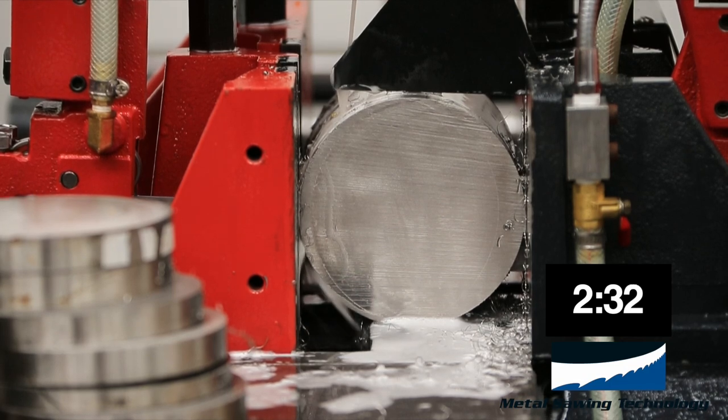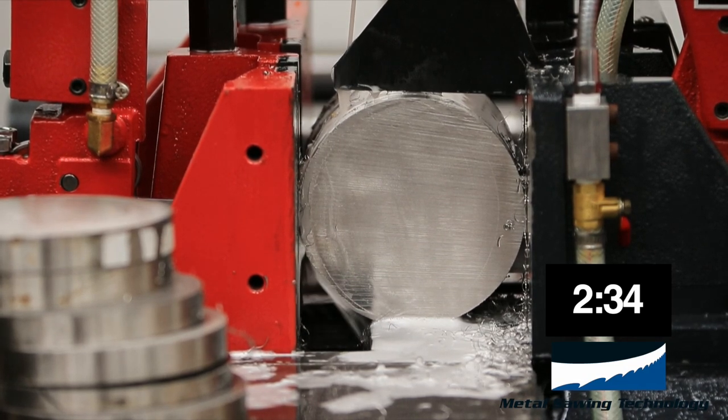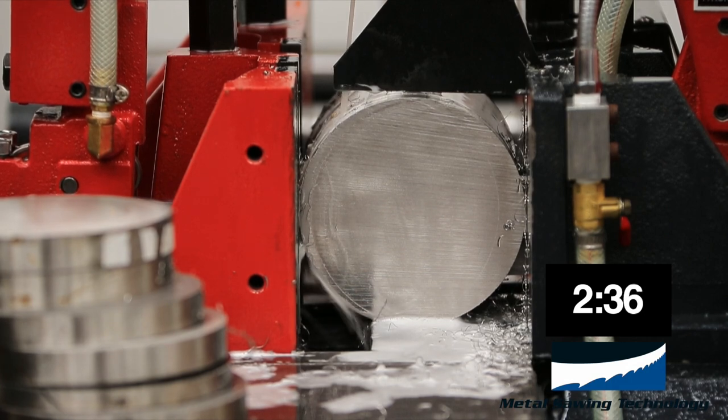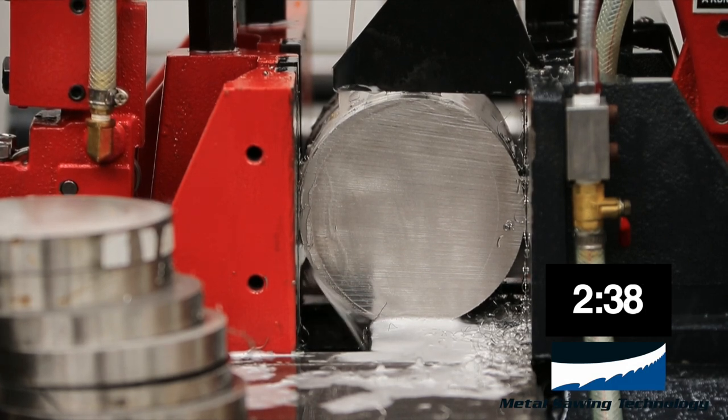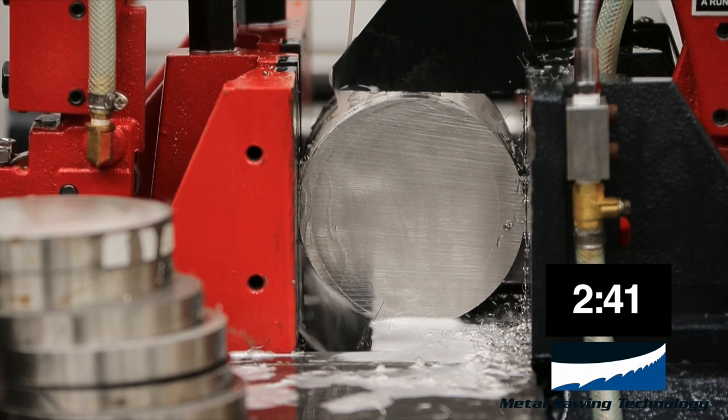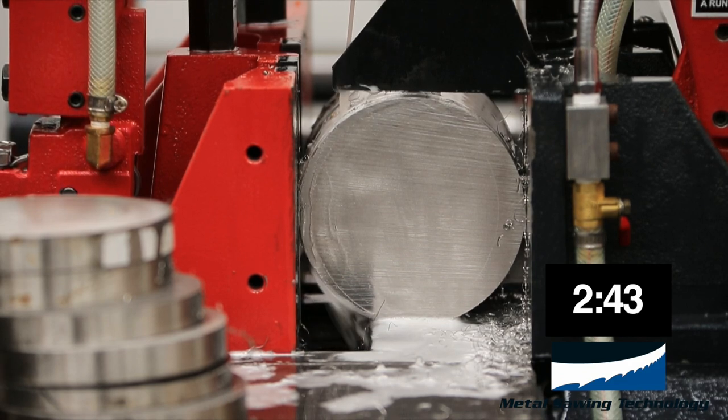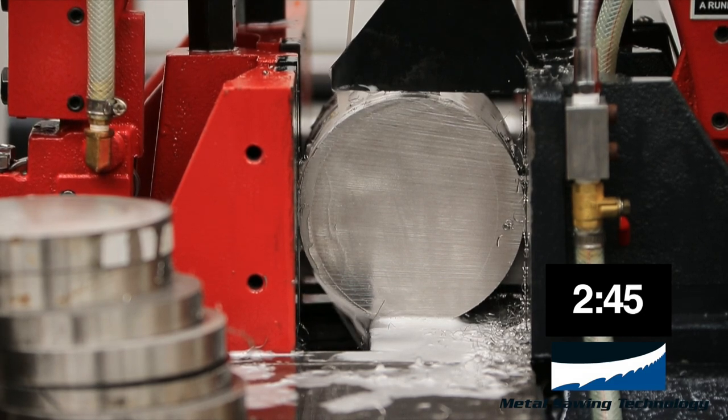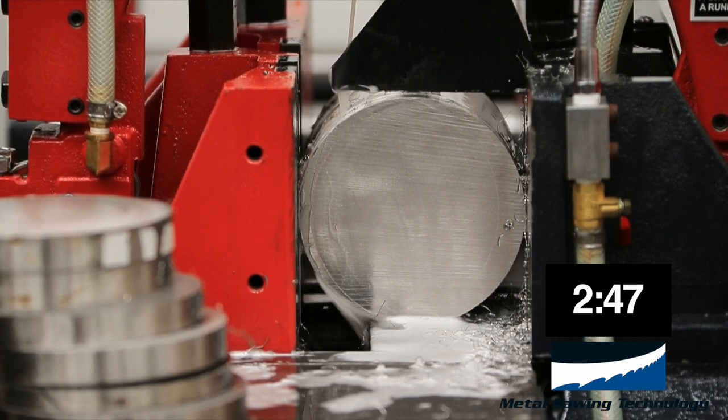We're running a higher band speed than normal. Normally, or typically, with a regular bi-metal M42 blade, you would run this blade speed at 100 to 110 surface feet per minute, and your cut time would vary between 15 to 18 minutes on a typical application.